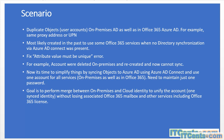So now it's time to simplify all this. What I'm looking for in my lab environment is to simplify things by syncing objects to Azure AD using Azure AD Connect and use one account for all services — on-prem as well as Office 365. One password, one account, one identity. The goal is to perform a merge or match between on-prem and cloud identity to unify the account without losing associated Office 365 mailboxes or any other services, including the license.